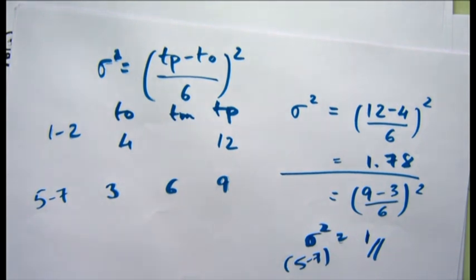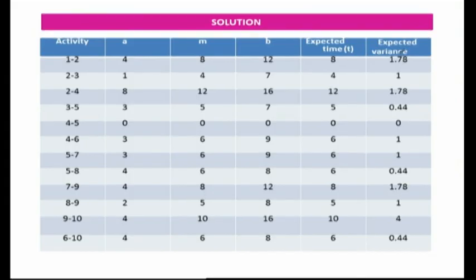Looking at the resultant table, we can see the expected variance for each activity from (1,2) to (6,10): 1.78, 1, 1.78, 0.44, and so on. We have now learned how to calculate the estimated time using one formula and the expected variance using another formula.